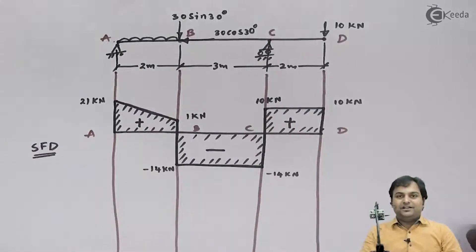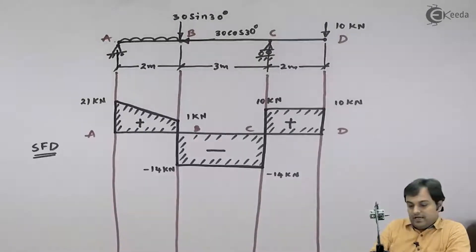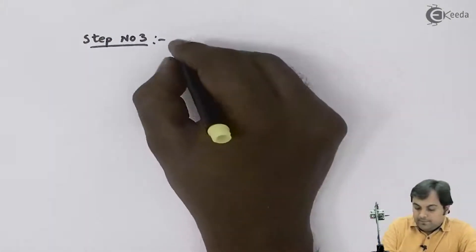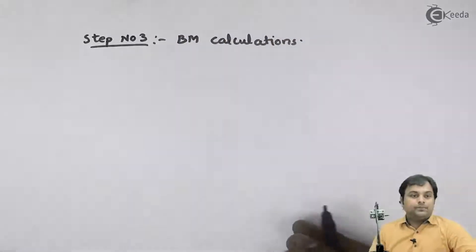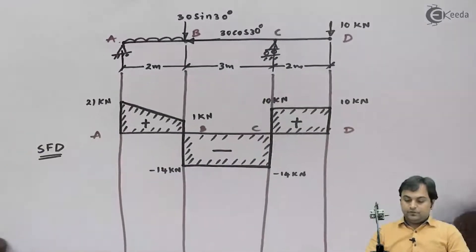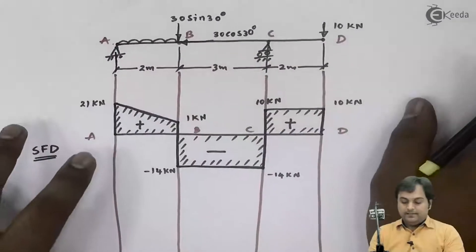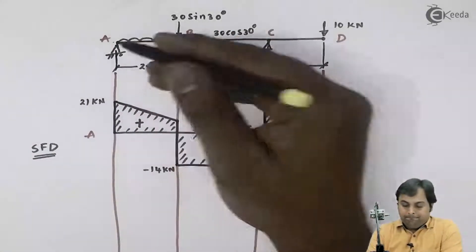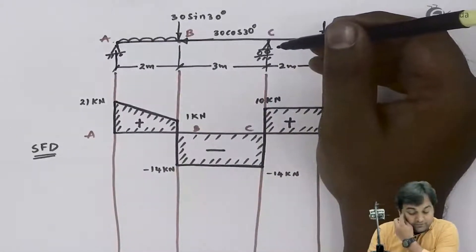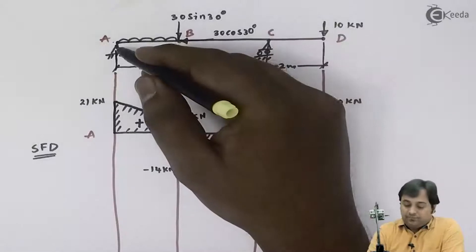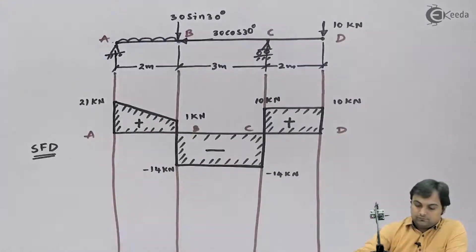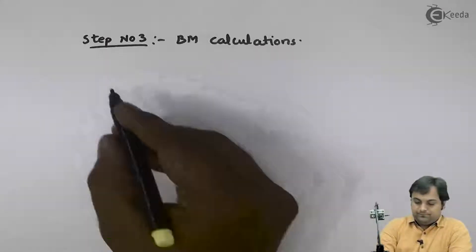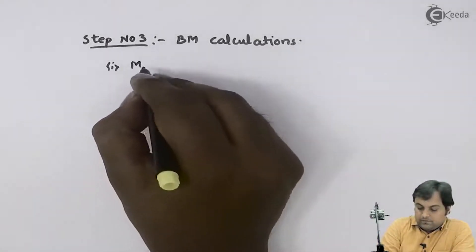Next I have to draw the bending moment diagram, and for that I need to calculate the bending moment at all critical points. Step number three is bending moment calculations. Looking at beam ABCD, it is hinged at A and roller supported at C. For a hinge support, the bending moment is zero, so moment at A is equal to zero.